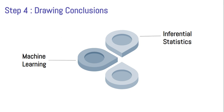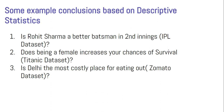We haven't started statistics yet, but inferential statistics basically means you take data from a small sample and try to predict for the entire population. We'll study this more, but in the data science context, the drawing conclusions step tends to use machine learning or inferential statistics. But if you're talking about a data analyst's domain, we use descriptive statistics to draw conclusions. We'll start descriptive statistics tomorrow.